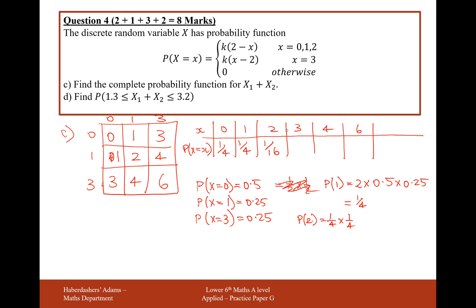The probability of getting a 3, this can happen two ways. We can either get a 0 then a 3, or a 3 then a 0. So the probability of getting a 3 is going to be 0.5, or a half, times by a quarter. This can happen in two different ways, so this is equal to a quarter.